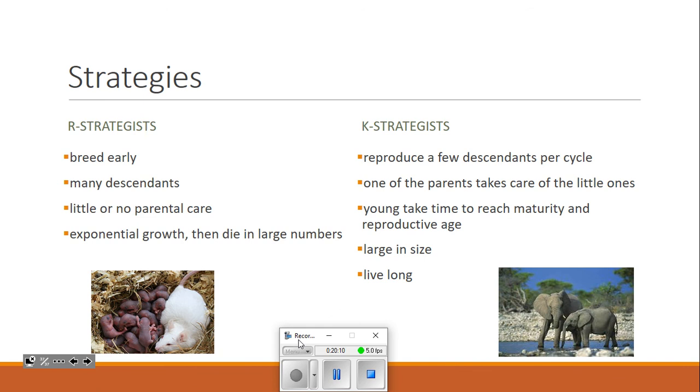So typically what you would have to do to answer a question about R or K strategists is pick from a list. Here's a list of characteristics. Which ones go with an R strategy? Which ones go with a K strategy? And there are several like that in the exemplar booklet that you should try.